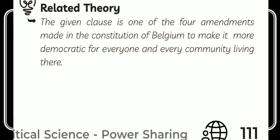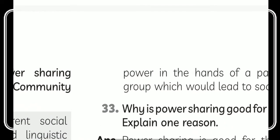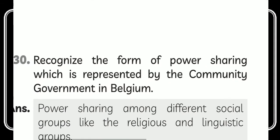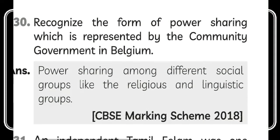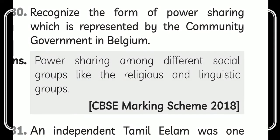Related note: the community government clause is one of the four amendments made in the Constitution of Belgium to make it more democratic for everyone. The next question is: recognize the form of power sharing represented by the community government in Belgium. The answer is power sharing among different social groups like religious and linguistic groups.